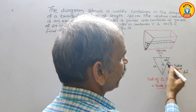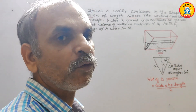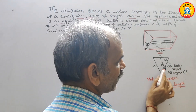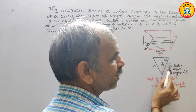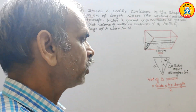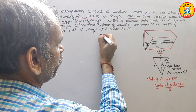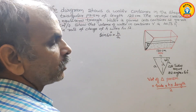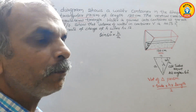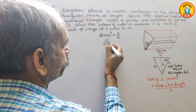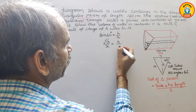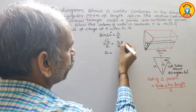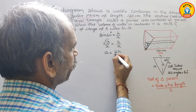Since we have a 60° angle, we will use trigonometric ratios. Here h is the opposite side and A is the hypotenuse, so opposite over hypotenuse gives sine. Therefore: sin 60° = h / A. Since sin 60° = √3 / 2, we get √3 / 2 = h / A, which gives A = 2h / √3.